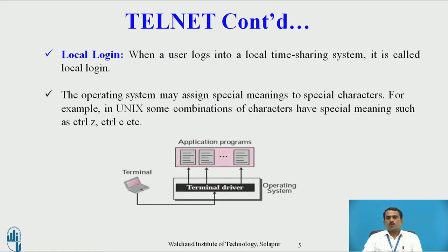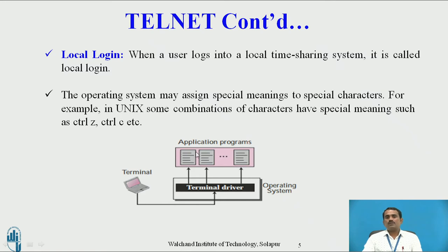This is the block diagram of local login. In local login, through the terminal the user types data. The connection between the user and the computer is via terminal — the intermediate device may be keyboard, mouse, or printer. Through the keyboard, the user types data, and that data goes to the operating system via the terminal driver. Whatever data needs to be transferred is forwarded to the application program and then to the end user. Since all systems are connected on a single LAN, there is no need to use any different format. The user types data, it goes to the operating system, which echoes it back or sends it to the end users.